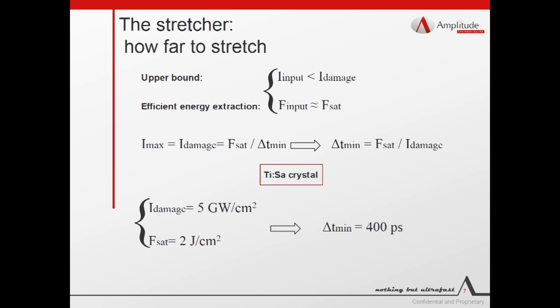For example, we can estimate the time duration in the case of titanium sapphire crystal, with a damage threshold of 5 gigawatts per centimeter square, and a desired operating fluence of 2 joules per centimeter square. From this data, we estimate a pulse duration of 400 picoseconds.